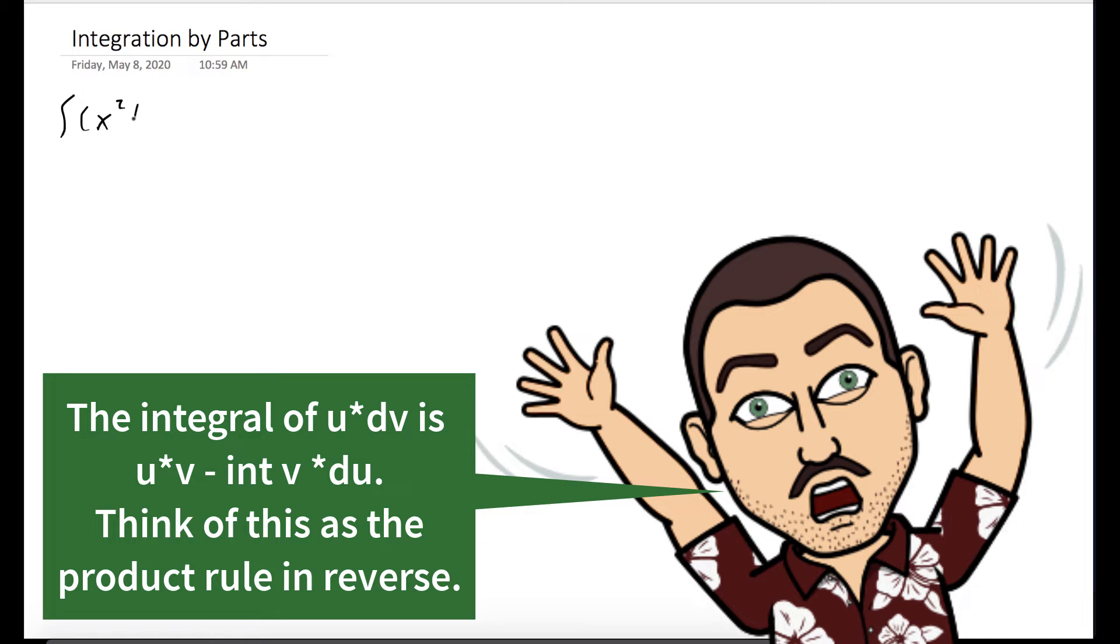So we want to evaluate the integral of the quantity x squared plus 2x times cosine of x dx. And so we're going to use integration by parts.